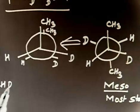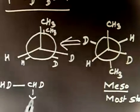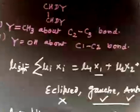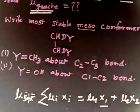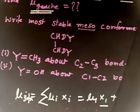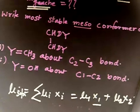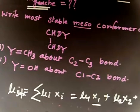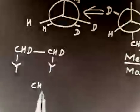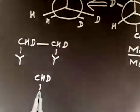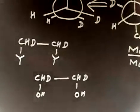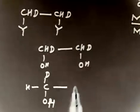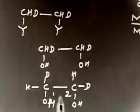Part B also asks to write the most stable meso conformer when Y is OH, along the C1-C2 bond. In this case the compound is CHD-OH at C1 and CHD-OH at C2. For meso, both carbons should have the same groups: H, D, and OH on each carbon.